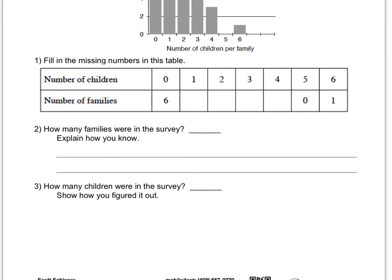Number two, how many families were in the survey. So you're going to have to figure out the total number of families. And you can do that by basically just adding that bottom row up and then explain how you know, how you found that out.